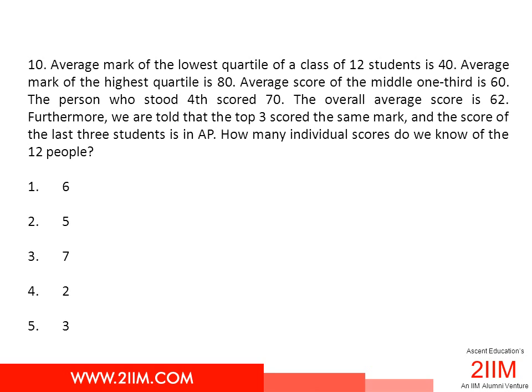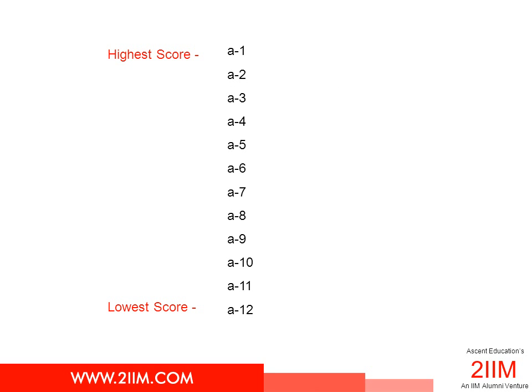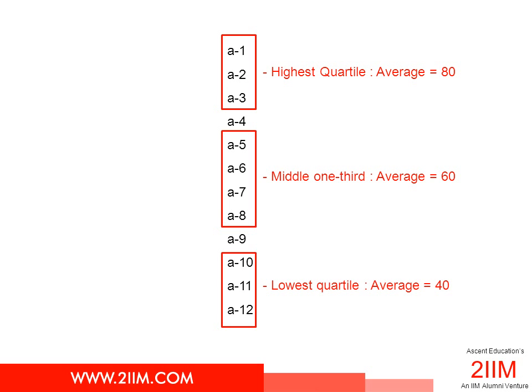Let's see how we can solve this one. To begin with, let's arrange all the scores of the students in descending order starting from A1 through to A12. So A1 would be the highest score and A12 would be the lowest score. Let's capture the information given in this figure. The highest quartile average is 80, or the average of A1, A2, A3 is 80. The lowest quartile average — average of A10, A11, A12 — is 40.